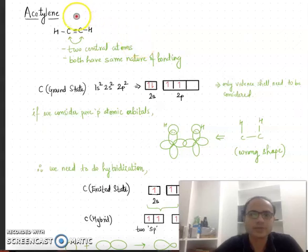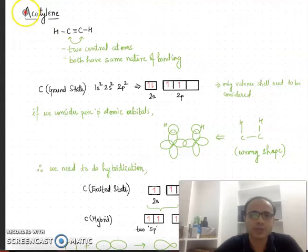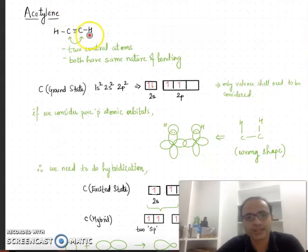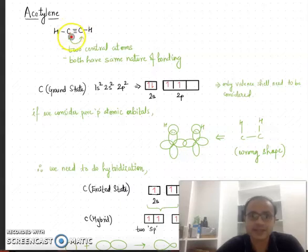Today we look into the application of valence bond theory to find the shape of the acetylene molecule. From school level, you know acetylene — its IUPAC name is ethyne. As the name says, it's an alkyne, composed of multiple bonds, and this is the basic structure of the ethyne molecule.